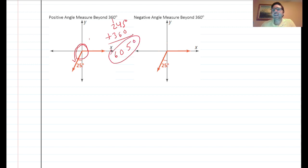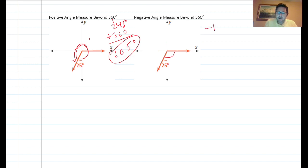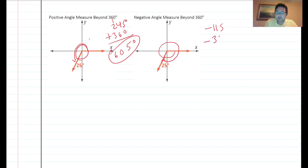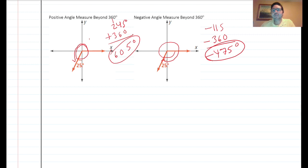For the negative angle beyond 360: we know the negative angle was negative 115 degrees. Add another full circle in the negative direction — subtract 360 — giving negative 115 minus 360 equals negative 475 degrees. All four representations refer to the same terminal position, just different angle measures.